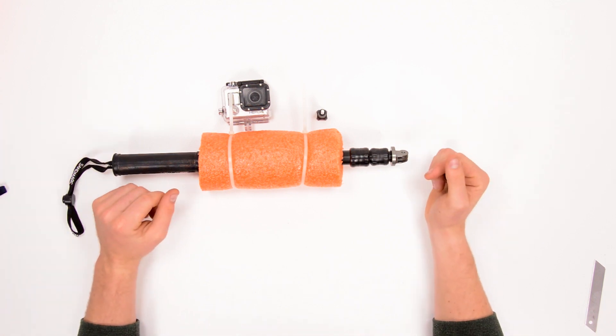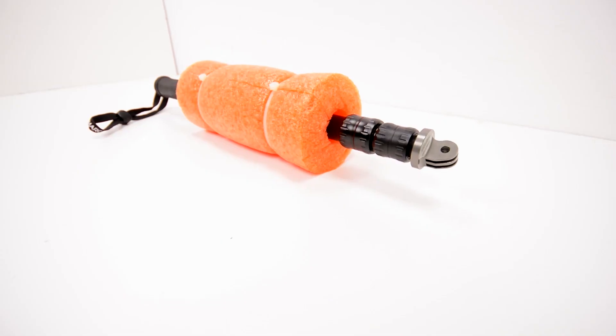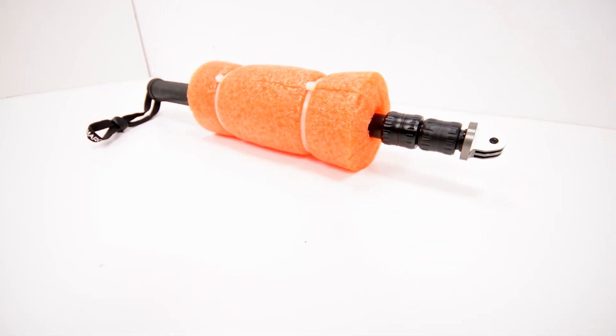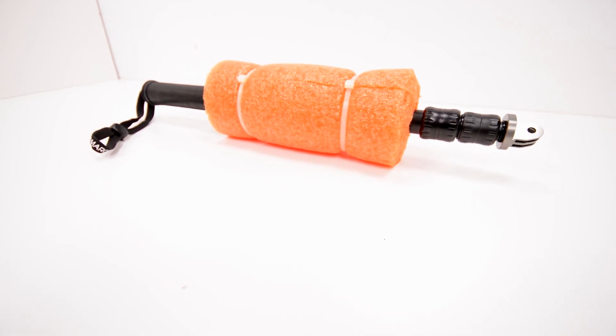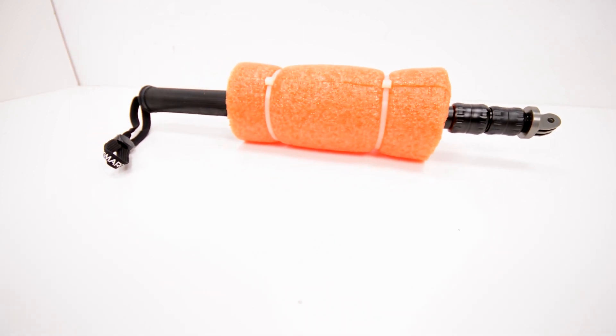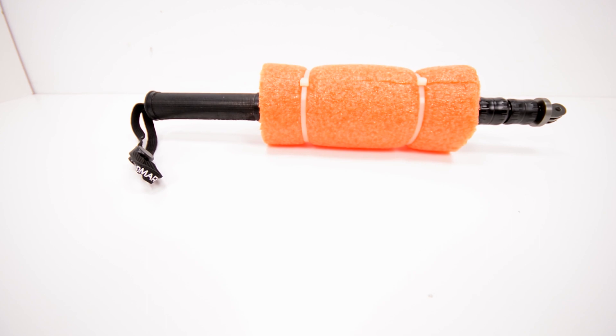And just like that, it's done. So this is a great way to add a float to a pole that doesn't come apart and doesn't allow you to easily thread on a pool noodle like those ones like the earlier method.